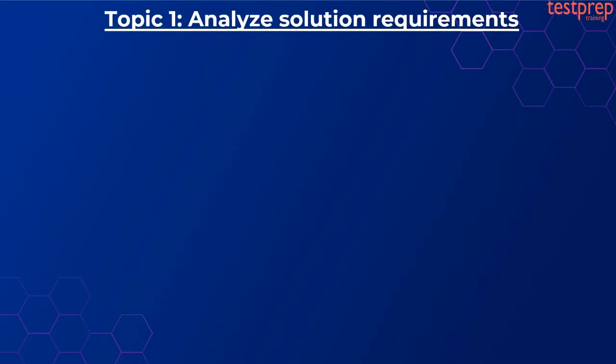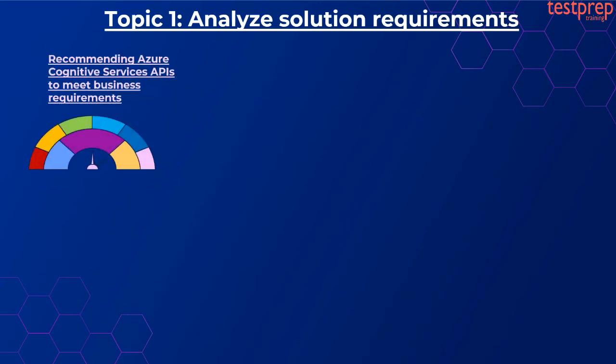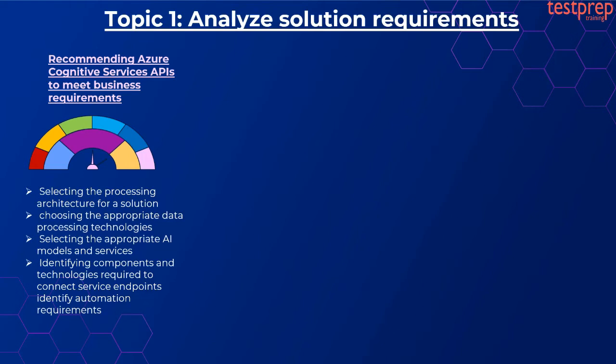Let us now discuss about course outline topics in detail. Topic one: Analyze solution requirements. Number one, recommending Azure Cognitive Services APIs to meet business requirements. It contains four subtopics: first, selecting the processing architecture for a solution; second, choosing the appropriate data processing technologies; third, selecting the appropriate AI models and services; fourth, identifying components and technologies required to connect service endpoints and identify automation requirements.